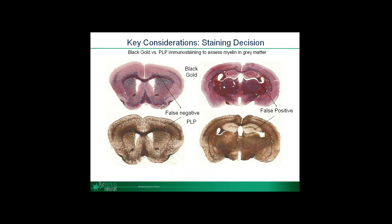In this example, you can see a comparison in adjacent brain slices stained with black gold — a very common myelin histological stain — versus PLP, the major component of myelin. The PLP staining is developed with DAB to give a permanent, high-contrast stain. In both stains there are areas of myelin staining, but when we look more closely we can clearly see within the black gold staining there are both areas of false-negative staining such as in the cortex and also false positives such as in the hippocampus. It's always important to consider the specific limitations of the stains you're using.